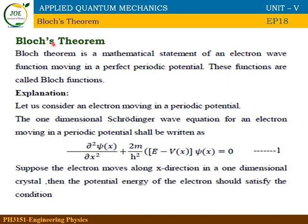Next is Bloch Theorem. Bloch was a scientist whose theorem is a mathematical statement. If an electron travels as a wave function through a perfect periodic potential, the electron exhibits wave-like motion. The wave function moving through a perfect periodic potential is what gives us the mathematical statement known as Bloch's theorem.